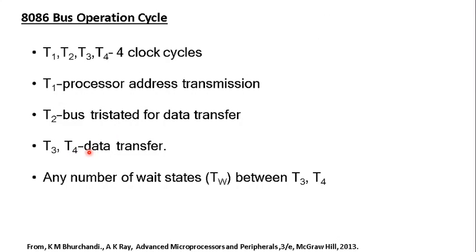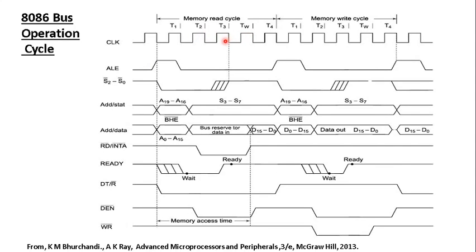The role of T3 and T4 is data transmission. Data transmission starts at T3 and ends by T4, and it can take a number of clock cycles depending on the device involved. This variable data transmission rate is indicated by inserting as many TW states as required between T3 and T4. So this read cycle is extended by one TW cycle, completing as T3, TW, and T4. TW indicates variable response devices in read or write cycles.